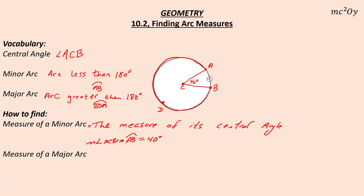The measure of a major arc — if you're using an entire circle — we could find the measure of arc BDA by taking 360 degrees, the full measure of all degrees in a circle, and subtracting out the measure of our minor arc, in this case AB. That would be 360 minus 40, which is 320 degrees. So by finding the measure of the minor arcs, you could find the measure of your major arc using that reasoning.